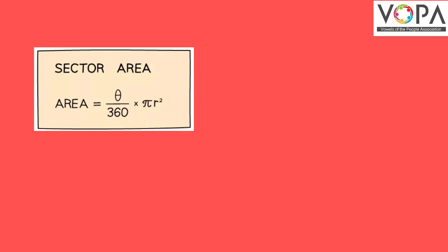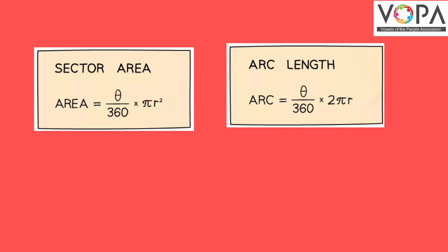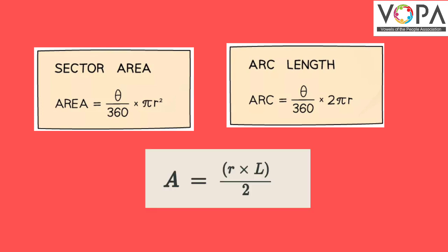The area of a sector can be calculated using the formula (θ/360) × πr², where θ is the angle and r is the radius. The length of the arc is calculated using the formula (θ/360) × 2πr. The area of a sector is also related to the length of the arc using the formula A = (r × arc length) / 2.